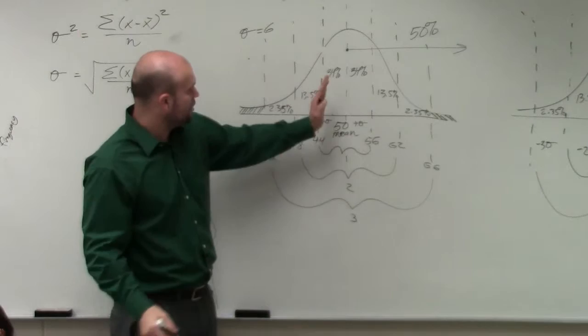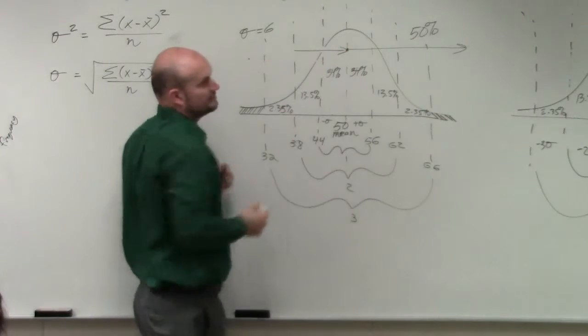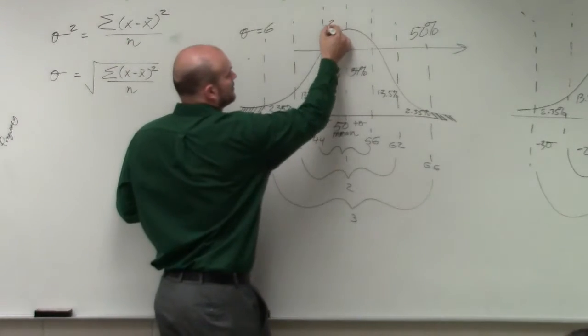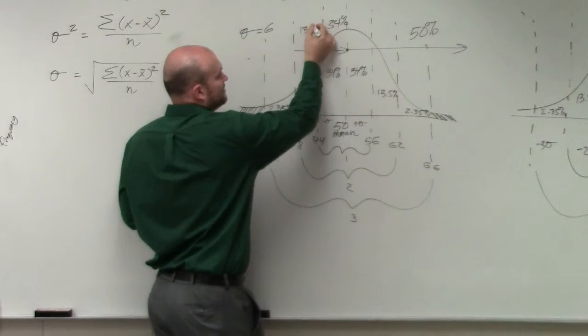From the mean over is exactly 50%. And then from 38 over, that's a 13. Now I just need to compute from here to here. Well, that's 34, and this is going to be 13.5.